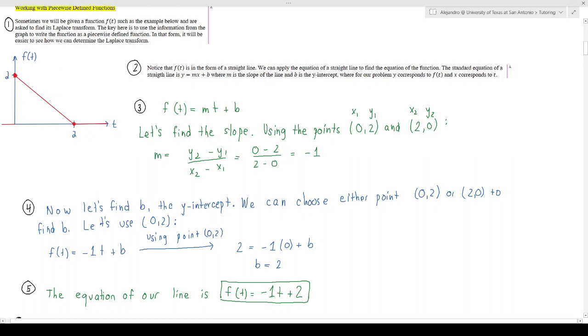We're looking at this graph here, so we have f(t) axis and the t axis. Our function is a line here, so it goes from 2 here, f(t) is 2 all the way down to this point here, and then it's just 0 from 2 all the way to infinity.